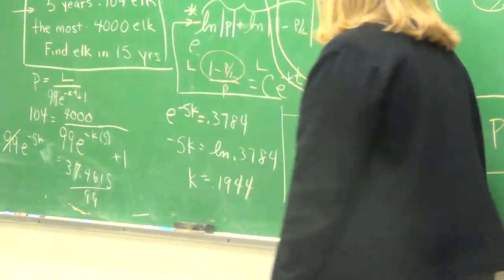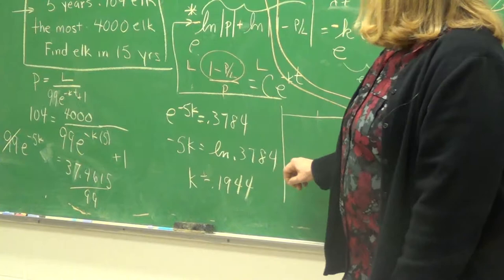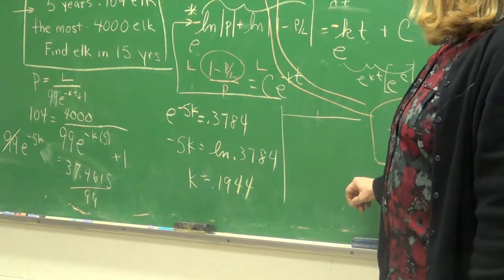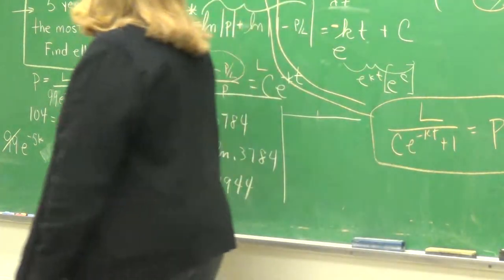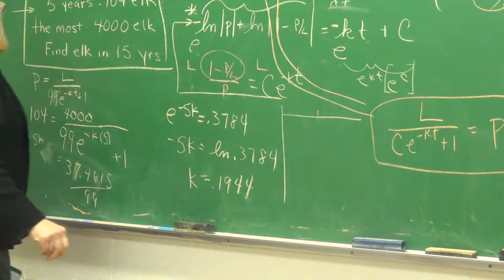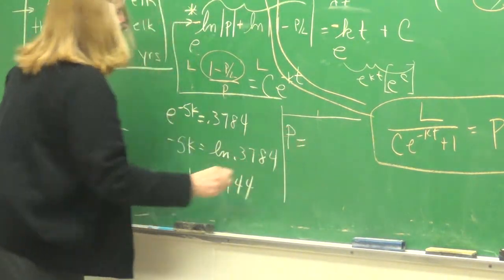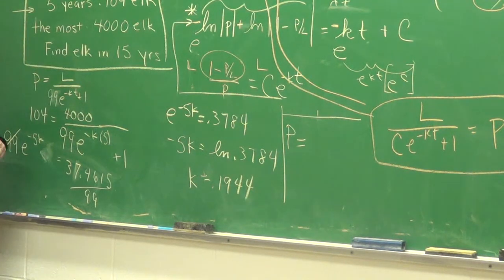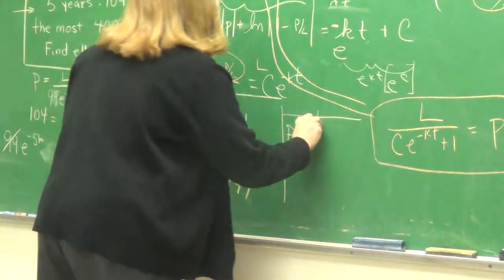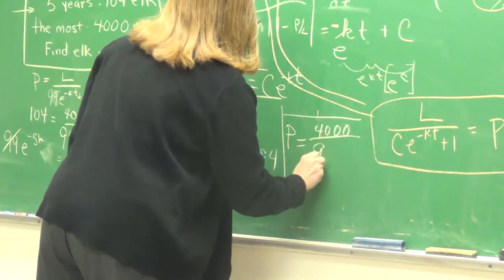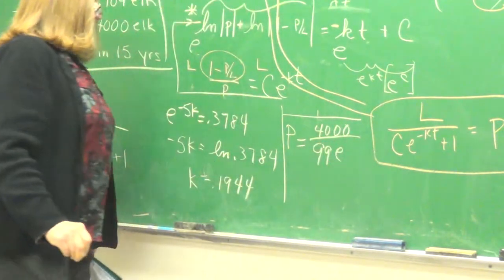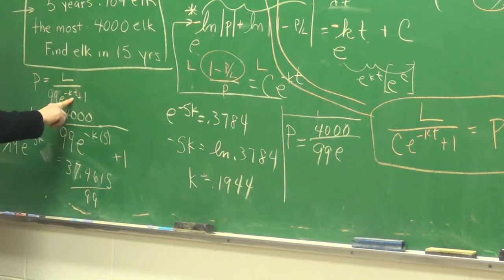So Brandon, point goes where? We have P. P equals, yeah, P because that's what we're looking for. P equals 4,000 over 99E to the minus K.